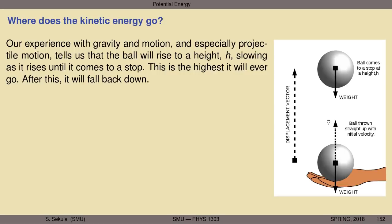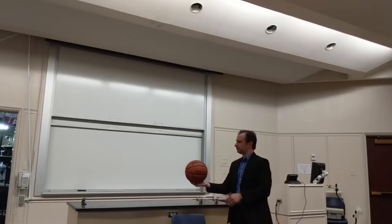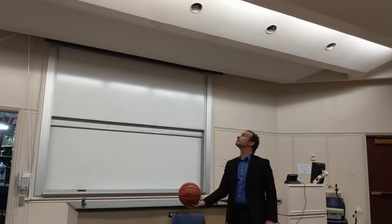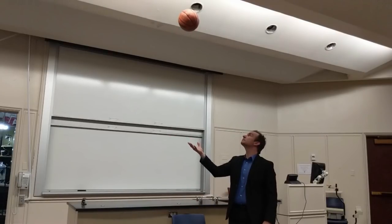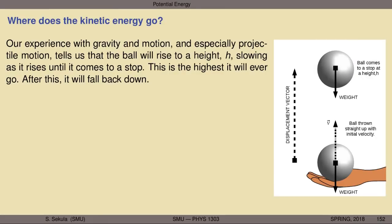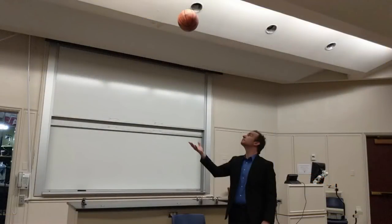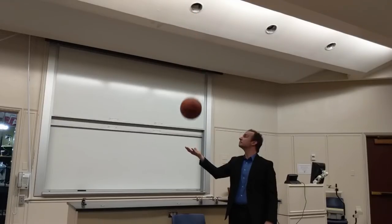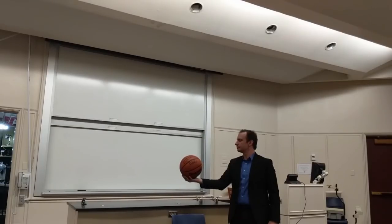Our experience with gravity and projectile motion tells us a few things. After accelerating the ball over a very brief period, it's going to have some initial velocity. It's going to rise up to some height h above where it started — from where it leaves my hand, y equals zero, to the maximum height h. From the moment it leaves my hand until it comes to a brief stop in the air, it's going to be slowing. That is, gravity is accelerating it in a negative direction — a deceleration. At height h, it may pause for an instant, then begin to fall back down.